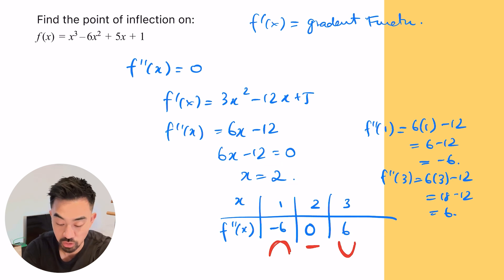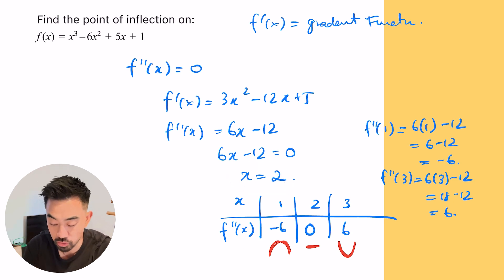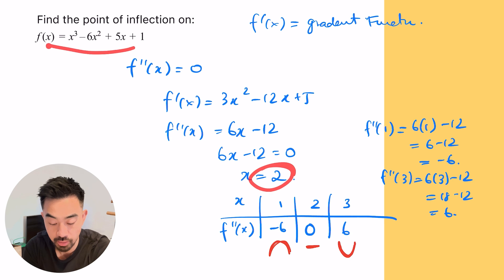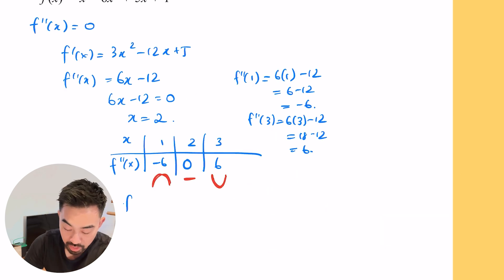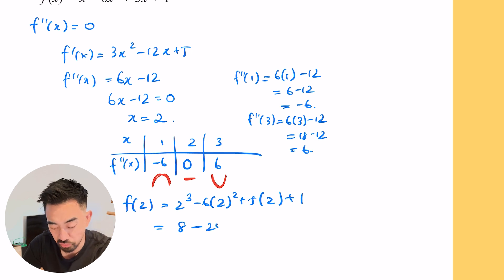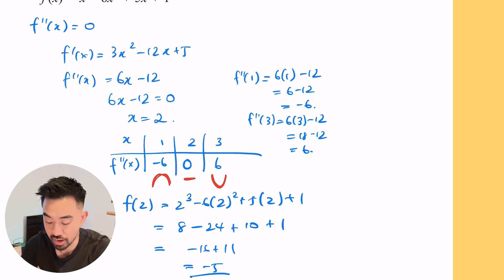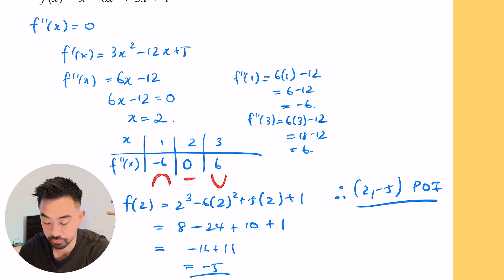One more thing we need: the y-coordinate corresponding to x equals two. So f of two is two cubed minus six times two squared plus five times two plus one. That's eight minus 24 plus 10 plus one. Eight minus 24 is negative 16, plus 11 gives us negative five. So the point of inflection is at (2, −5).